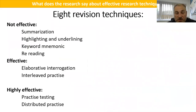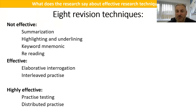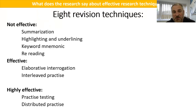There are basically eight revision techniques you could use. Some are not effective, some are fairly effective, and some are highly effective. Stop doing the non-effective ones: summarization — taking your notes and making them smaller — doesn't work. Highlighting and underlining might look nice but doesn't really achieve anything. Keyword mnemonics are mixed. Re-reading your notes is the typical thing people do, but it doesn't work — it won't put things into your long-term memory because it's not active enough.